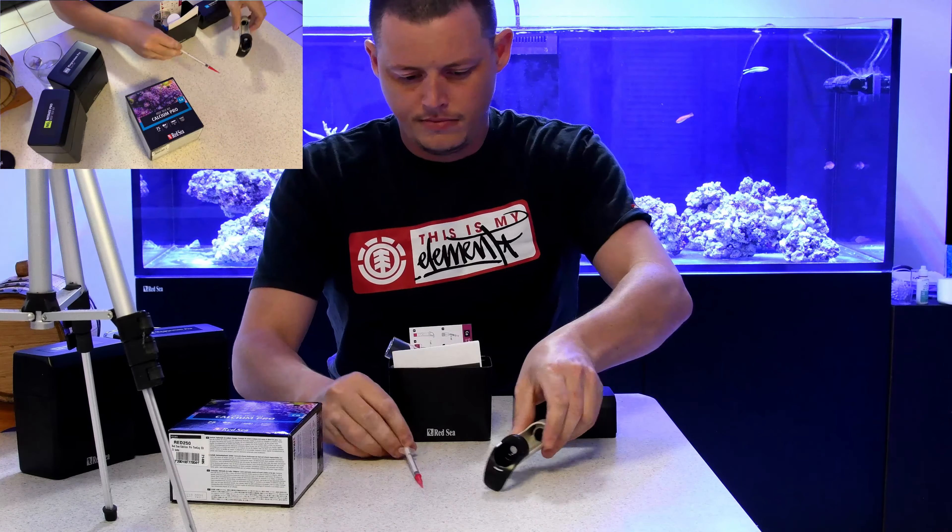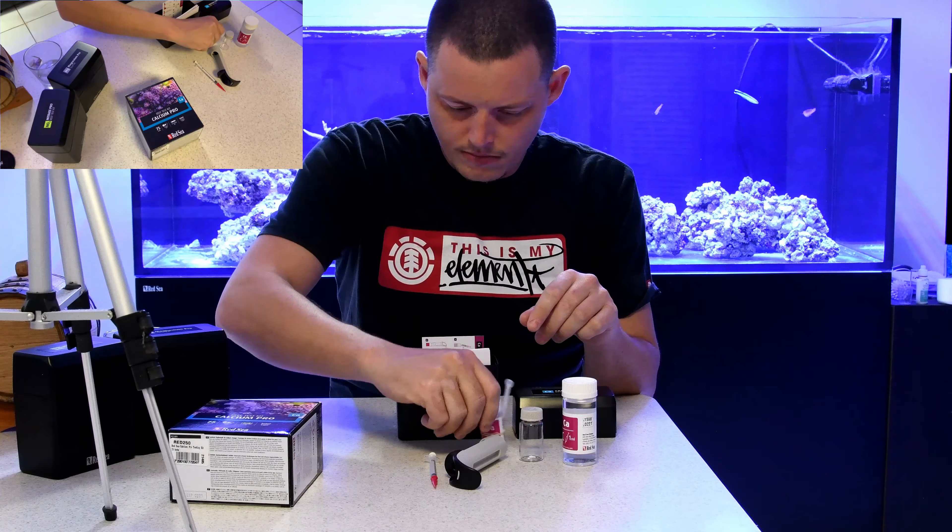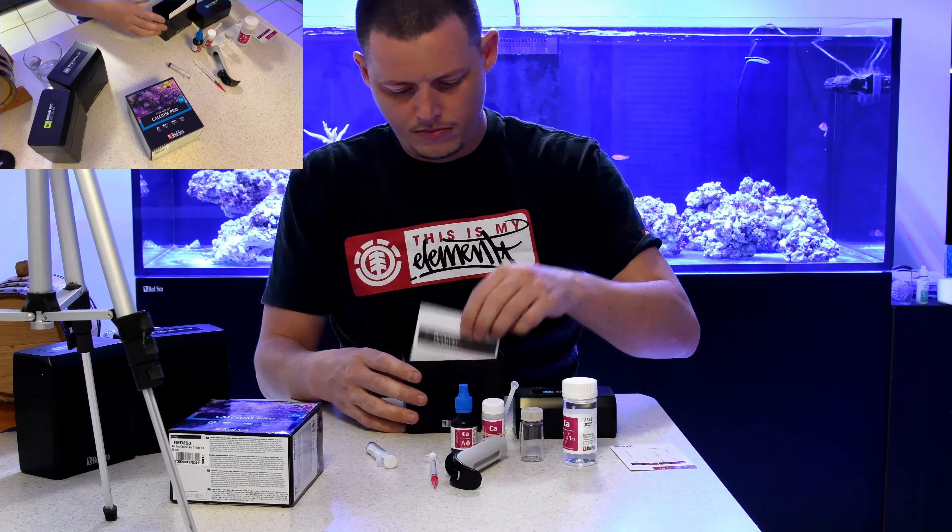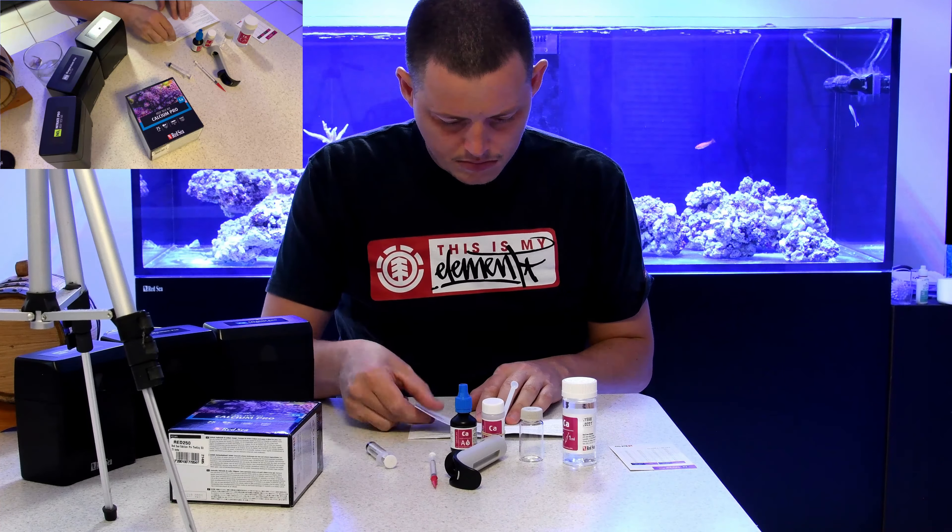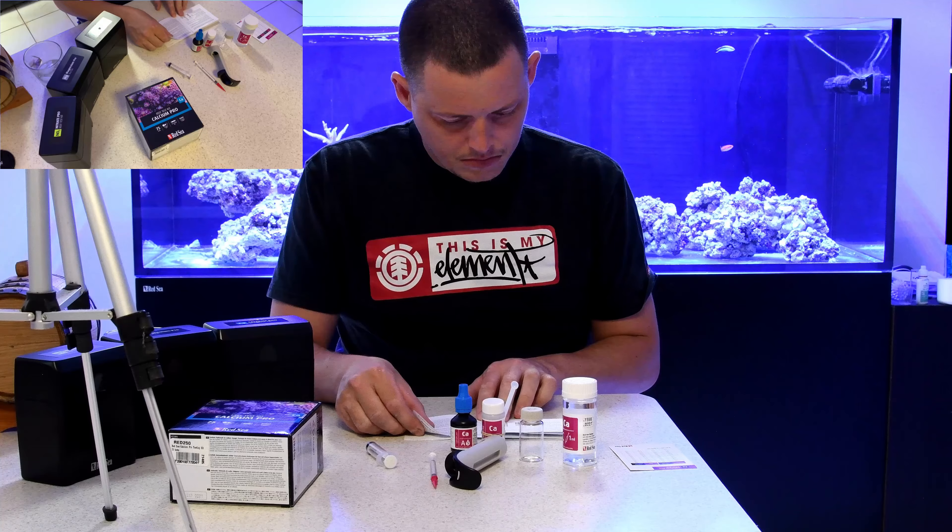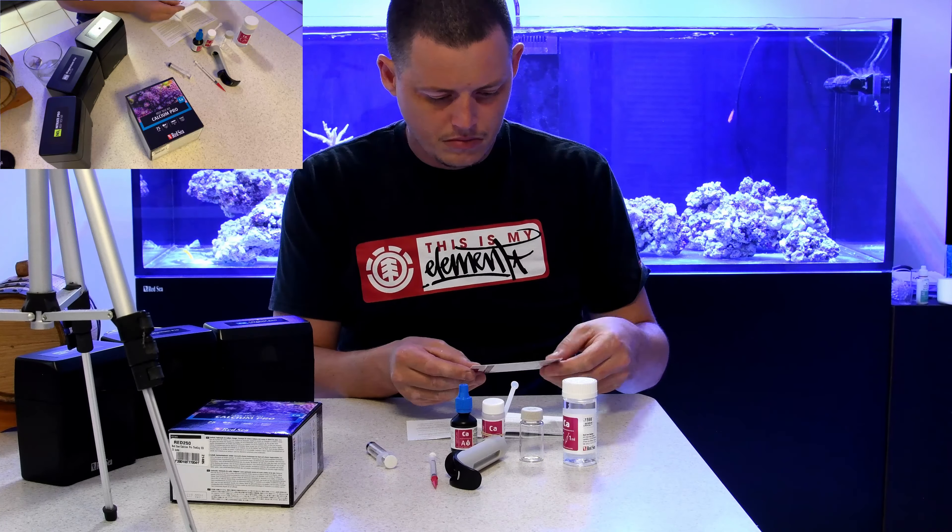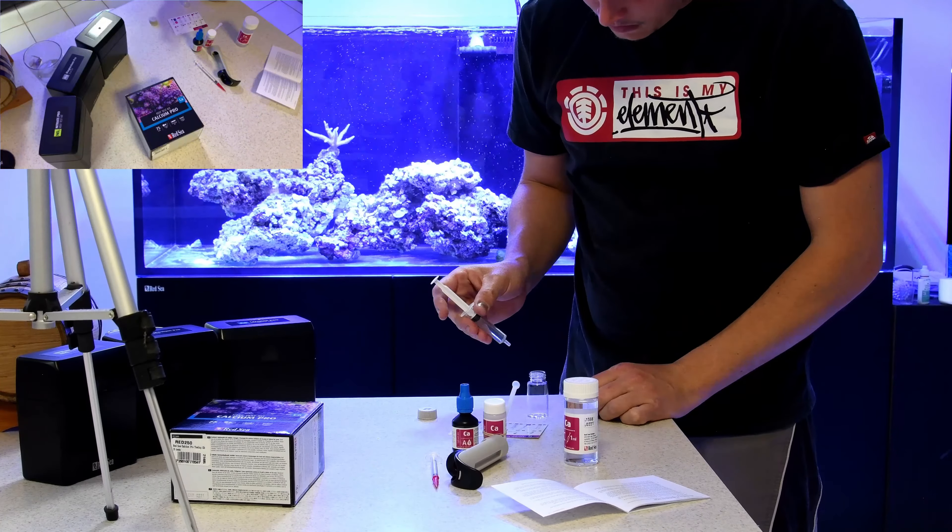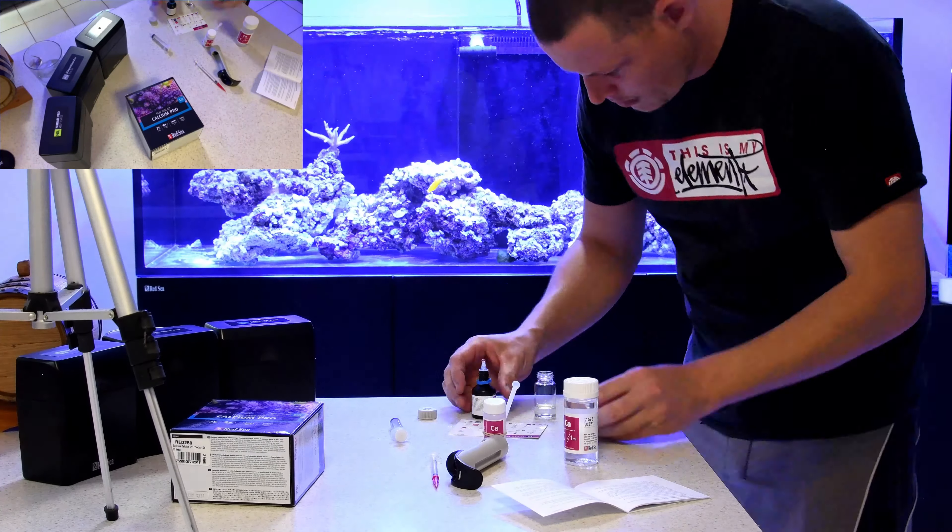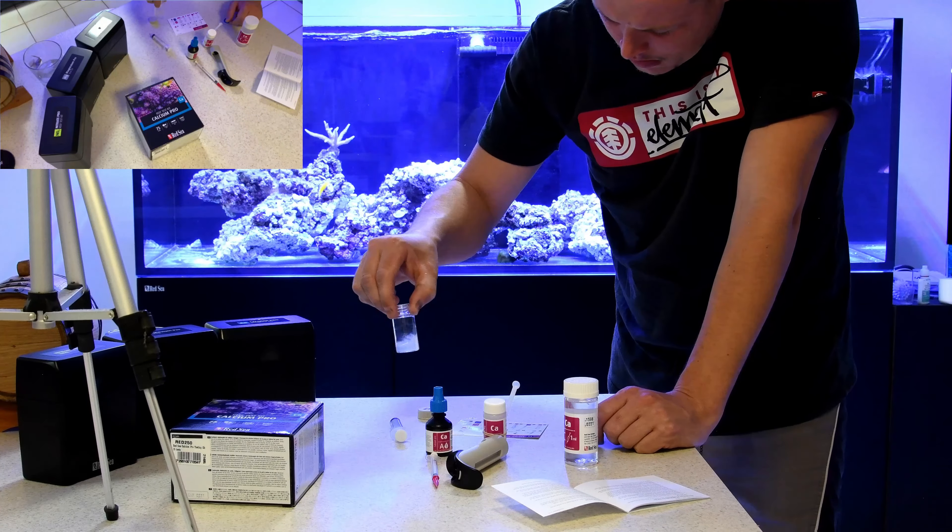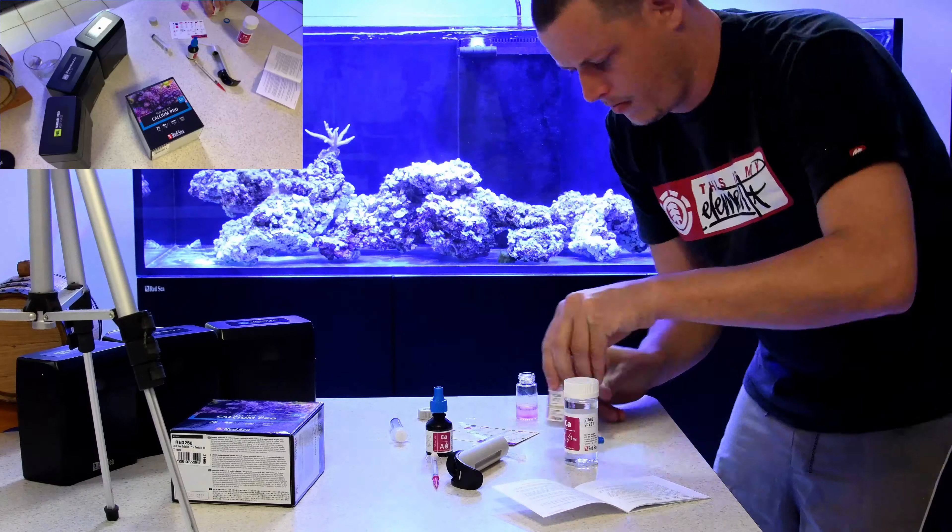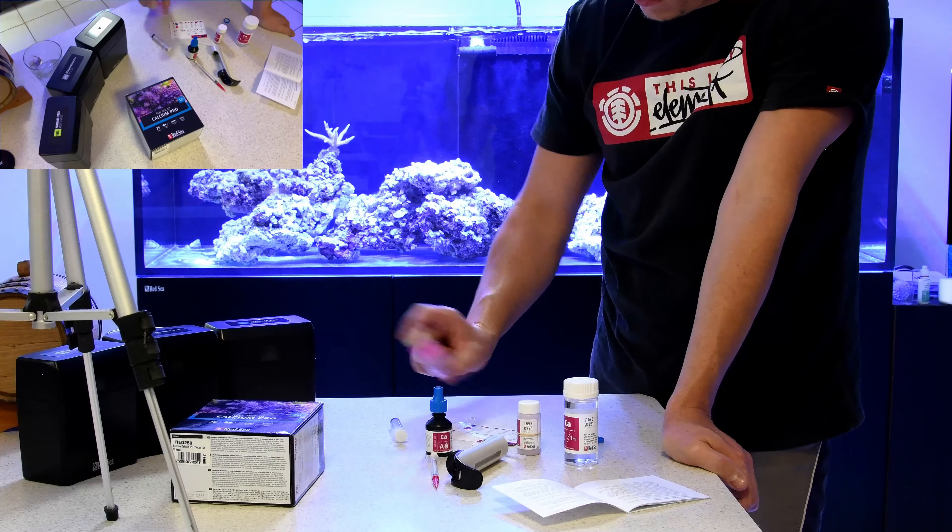Just going to jump straight into the Calcium Pro test kit. As you can see, I already have a couple of other Red Sea tests with the magnesium and nitrate. Pretty familiar with the titration. It's a great setup - having it all held in one hand and being able to steadily drip, shake, and view all at the same time really makes it quite accurate and fast to do the test.